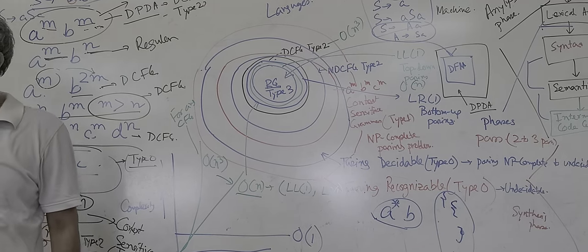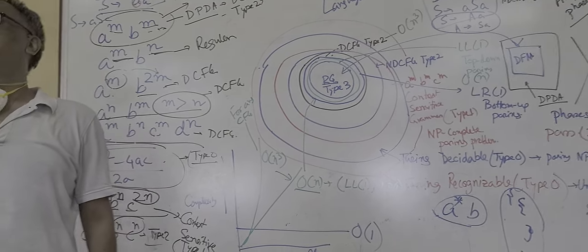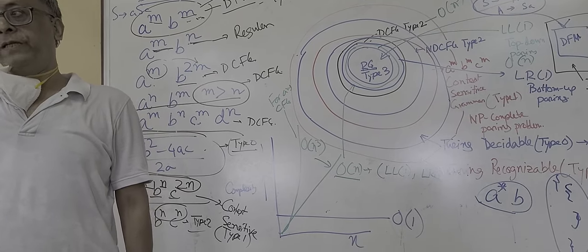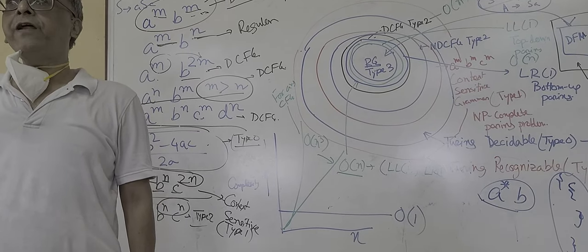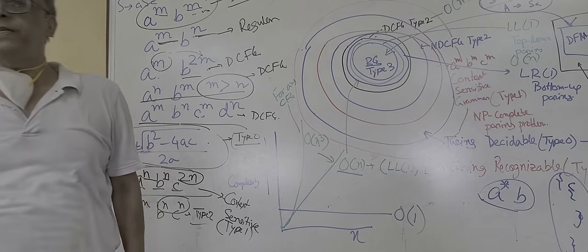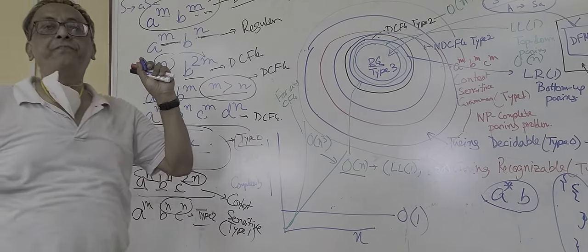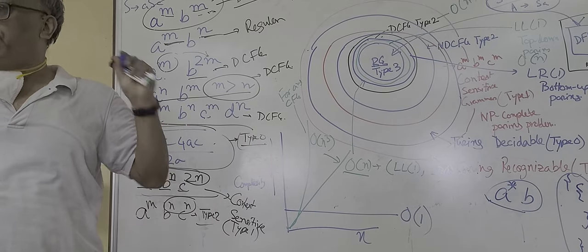So every rule of the grammar, the first terminal of the rule should be different. You cannot have two different rules for the same terminal from left to right. That is one of the severe restrictions of LL1 grammar.